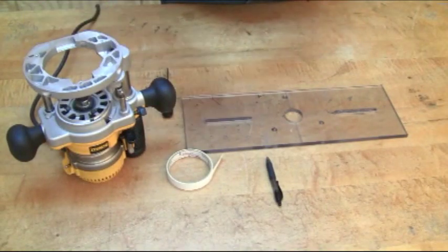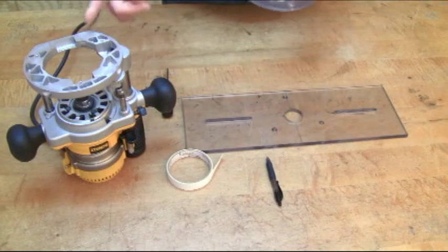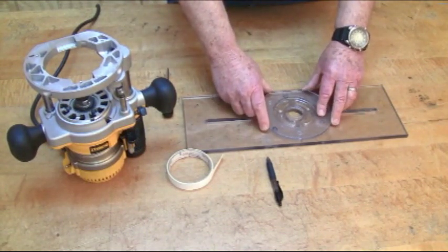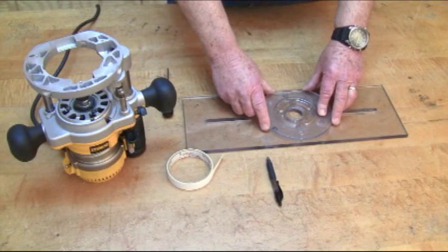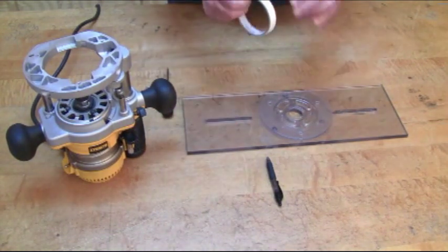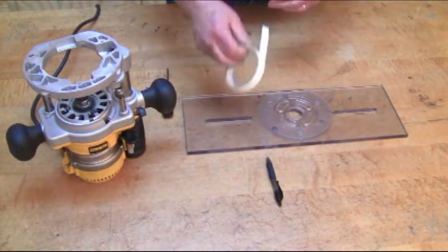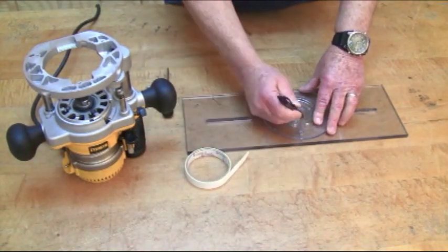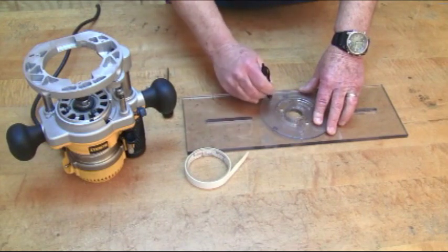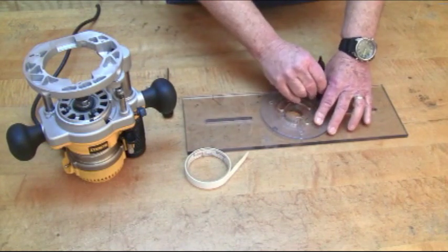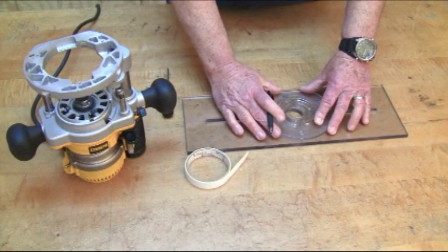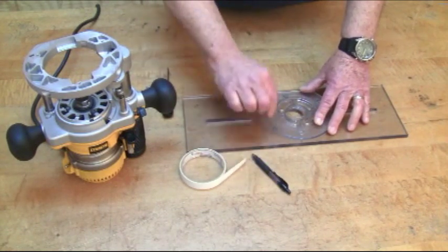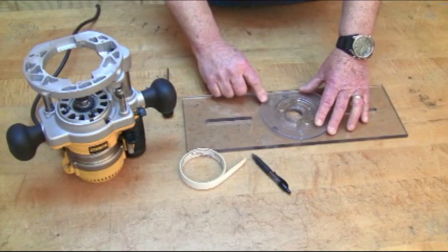The first thing that you want to do after you remove the plate from your router is to center it on the fluting jig plate. A little trick that helps is to use some double sided tape to stick it down so that when you mark the location of the individual holes the plate does not move. Best to use a felt tip pen which will give you a nice clear mark.